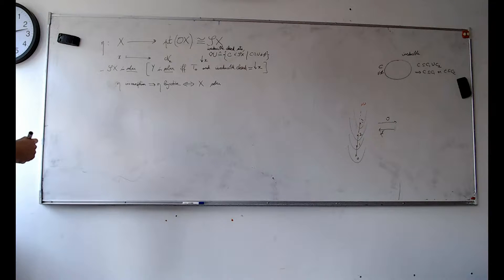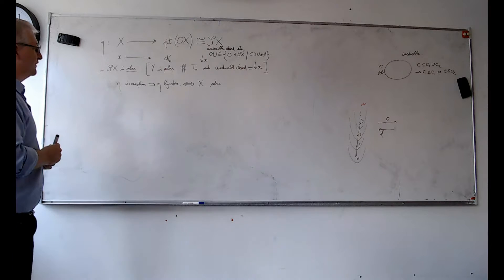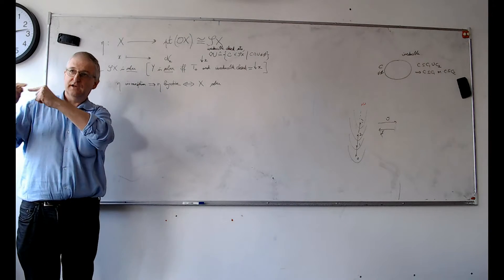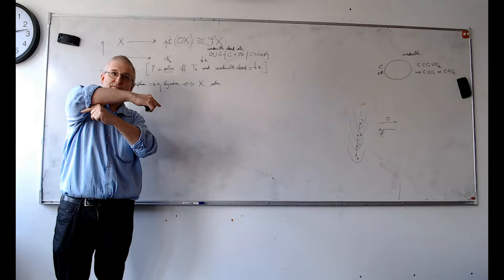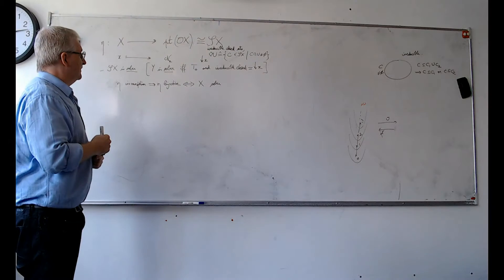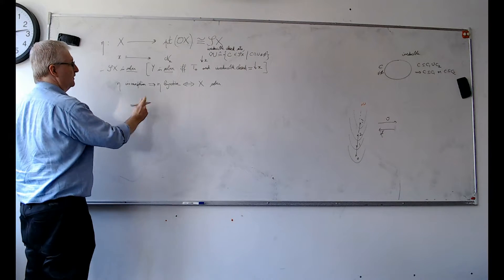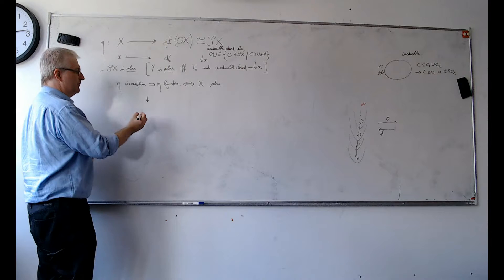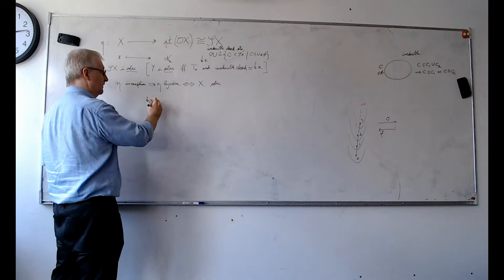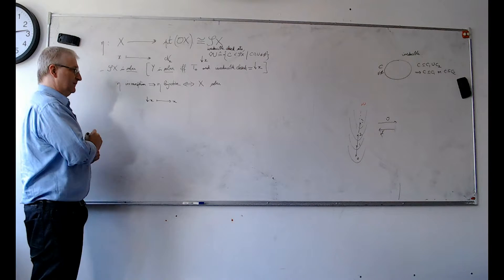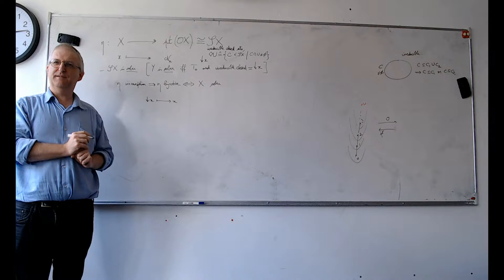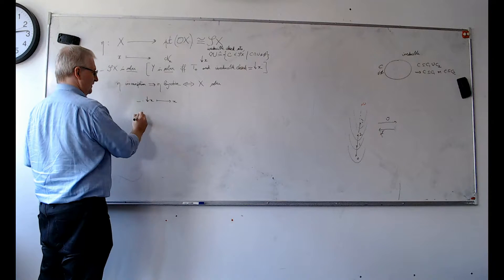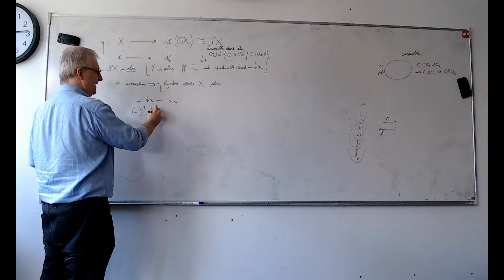Next: if η is bijective, then it is an isomorphism. An isomorphism is a bijection which is continuous and whose inverse is continuous. Assuming η is bijective, the inverse maps every irreducible closed set — which must be of the form down-arrow-X for unique X — back to X. If you take the preimage of an open set U in X under this inverse map, you get the set of irreducible closed sets C of the form down-arrow-X such that X is in U.